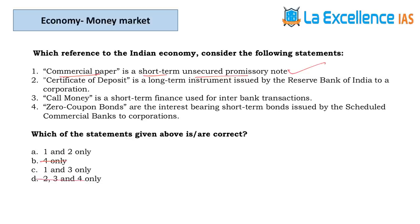The next question is about money market instruments. Commercial paper — short-term unsecured promissory note; statement 1 is correct. Certificate of deposit — described as long-term instrument issued by RBI to corporations. The name says deposit; deposits are made in banks, not issued by RBI to corporations. Customers deposit in banks and banks issue them a certificate of deposit. Statement 2 is wrong. Answer is C.